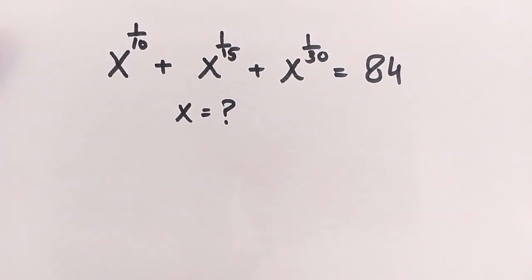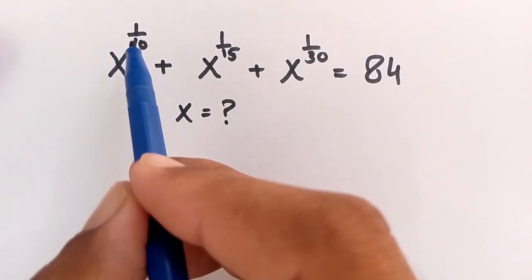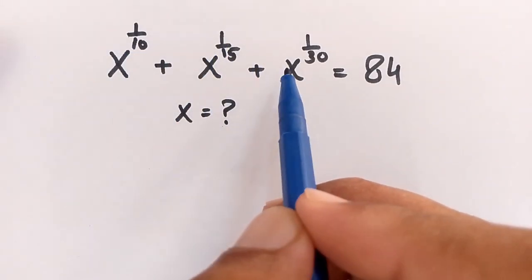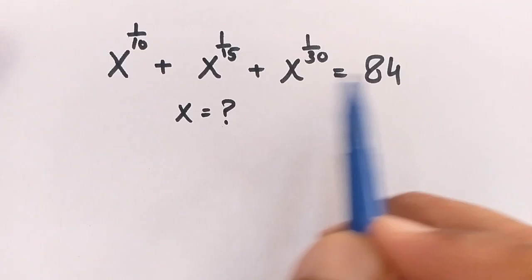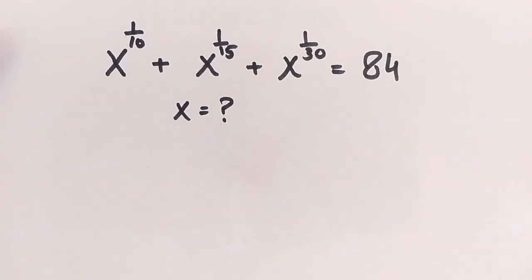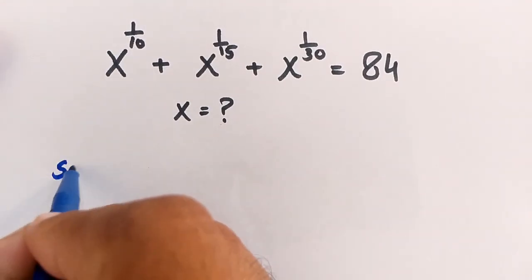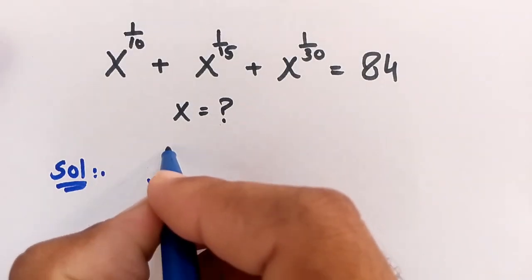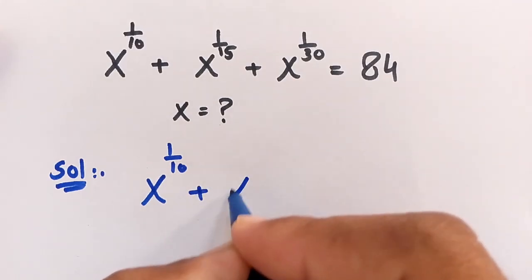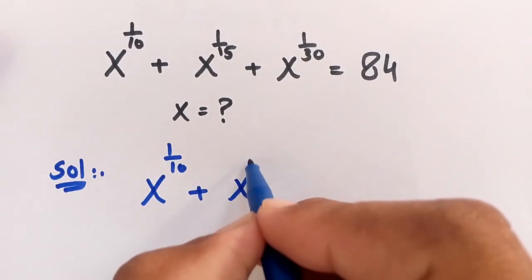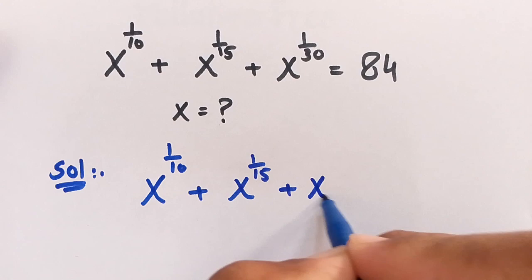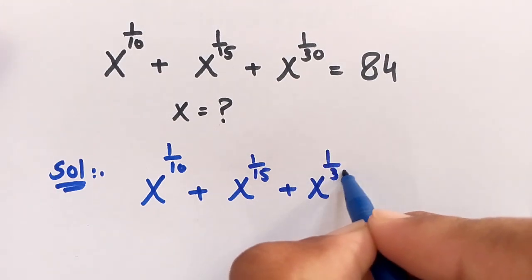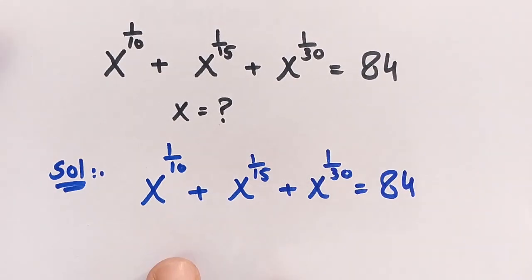Hello, you are welcome. Today we have to solve a most interesting math problem: x to the power of 1 over 10, plus x to the power of 1 over 15, plus x to the power of 1 over 30, is equal to 84. We have to find the value of x. The solution — we have to solve this interesting question by a very easy method.